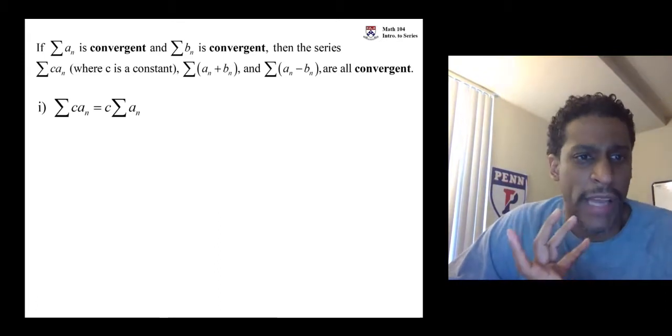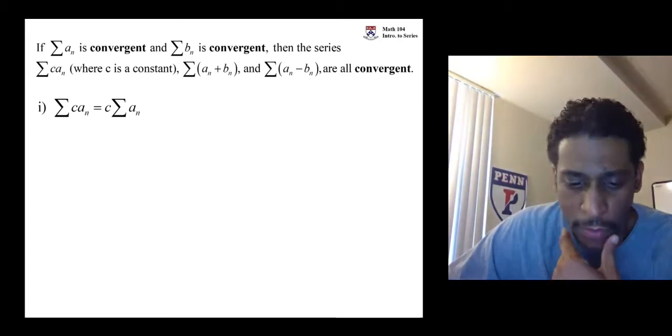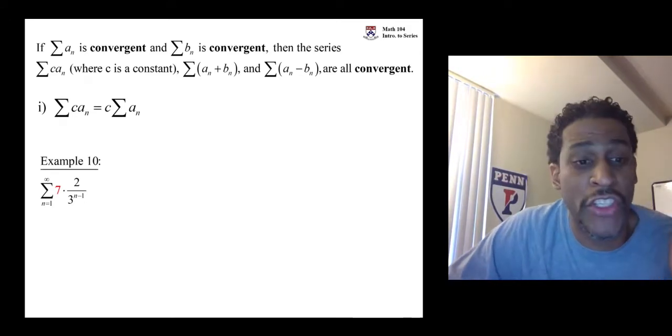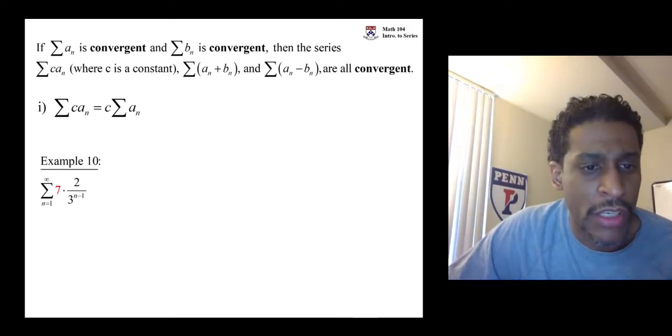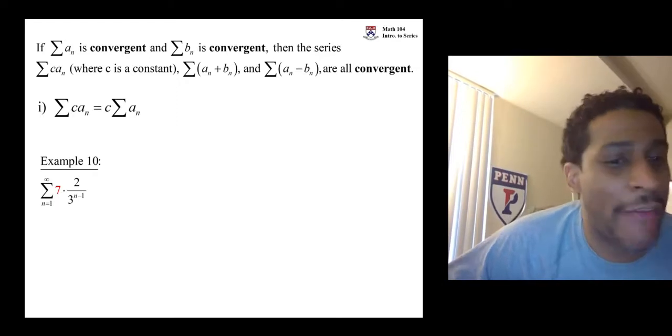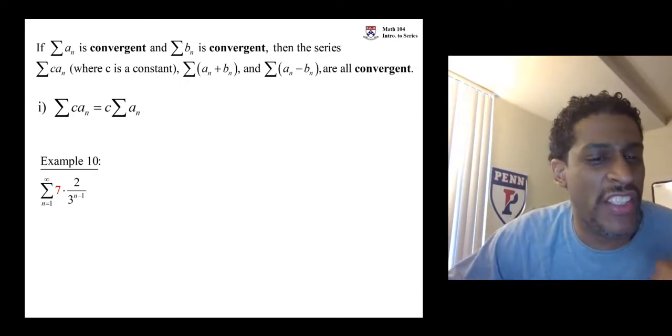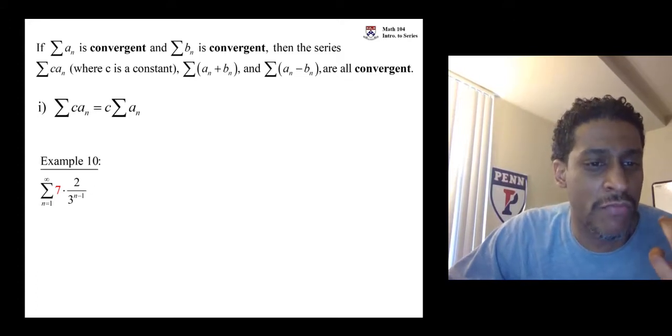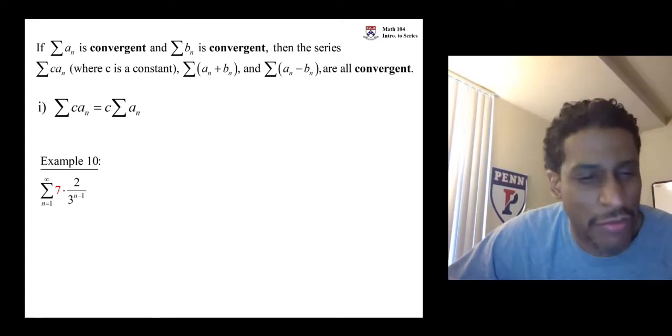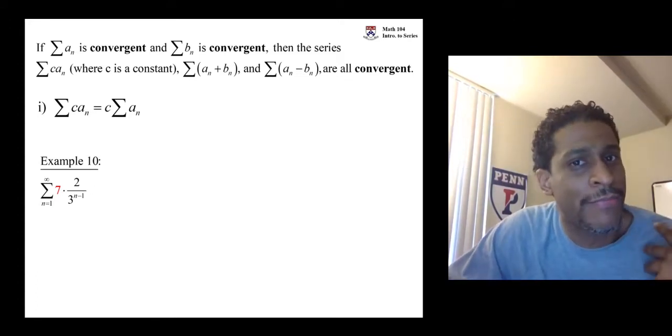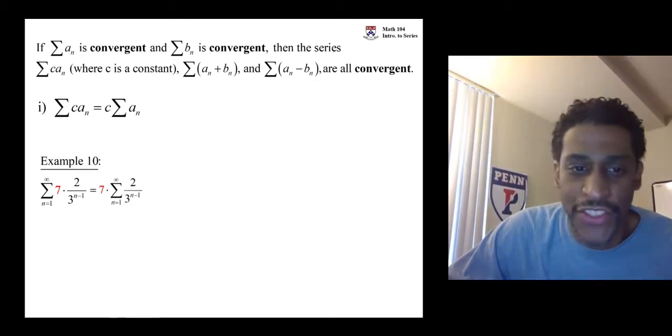Let's look at multiplying by a constant. Let's take one of the ones from a previous example here. The first geometric series times by seven. Do you really think that timesing by seven is going to stop a convergent geometric series from being a convergent geometric series? Nah. In fact, what you do is you pull the seven outside.